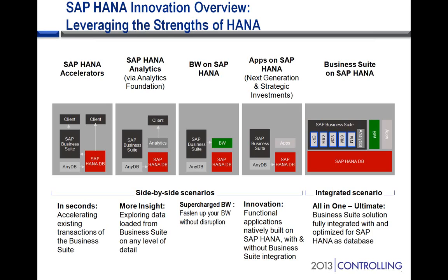It was near real-time replication — there's a database trigger that would say a new record has arrived in COEP, please transfer it to this database. And then the processes in ERP, and particularly in controlling, were being redirected to pull that data out of SAP HANA. There were various applications; as I said, the very first one was the COPA accelerator.